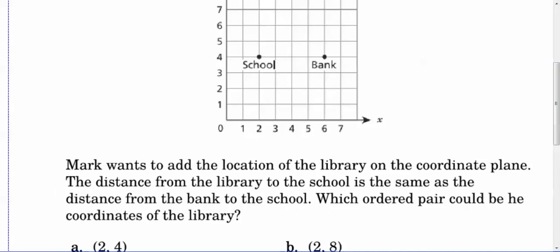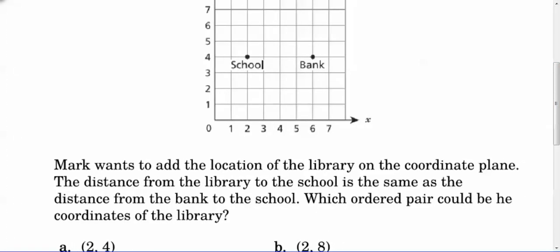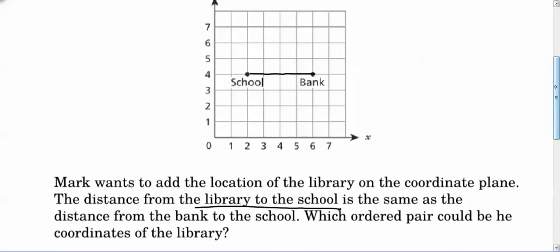So we know the school to the bank is one, two, three, four units, right? We're counting by ones based on the scale here. So we know that's four apart, and the distance from the library to the school is the same as from the bank to the school. So it's got to be four away from the school. So if we go four jumps up from the school, it could be there.